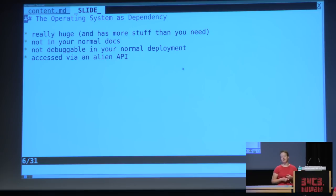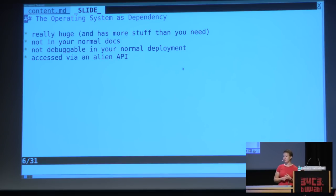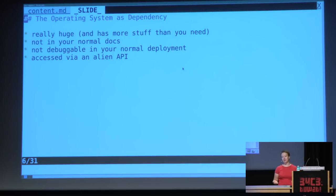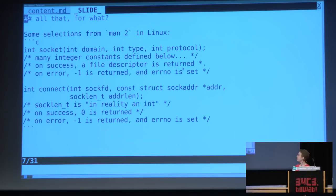The operating system is really huge — you almost always have more stuff than you need. The way you interact with it is different from the way you interact with the rest of your dependencies. The documentation is probably not where you normally look for docs, you probably can't debug it the way you normally debug your code, and when you're writing code that deals with it, you're accessing it with an API that doesn't look very much like the APIs you like to use in application-level code.